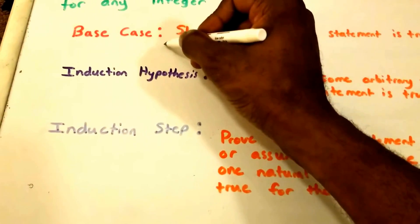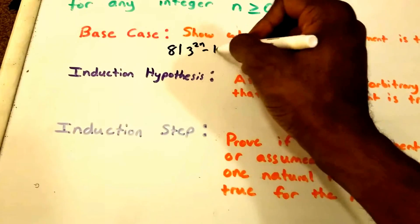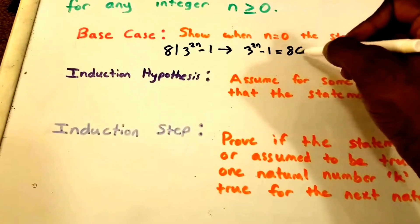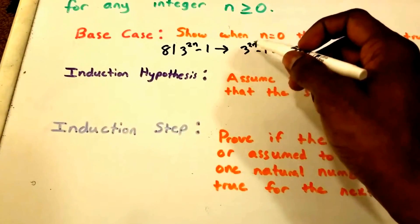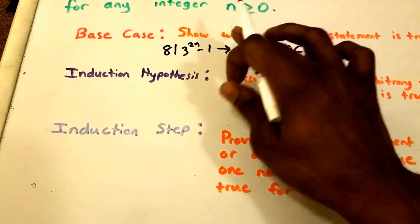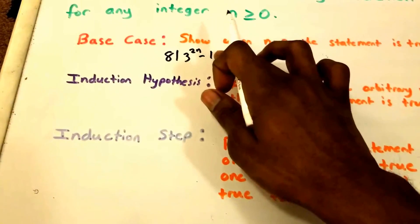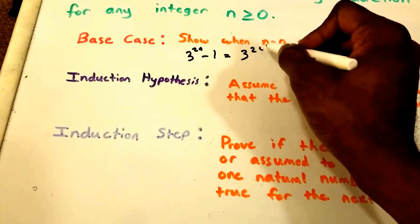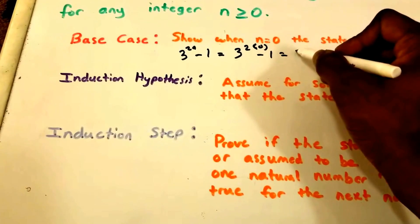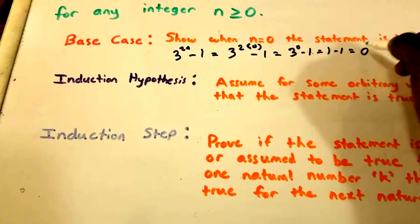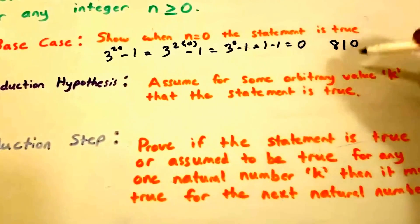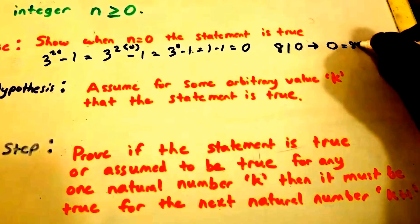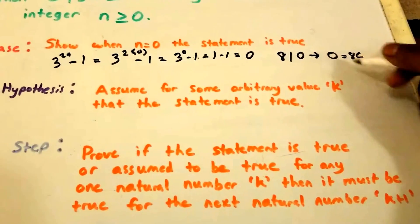In our base case we want to show that when n equals 0 the statement is true. Our statement is: 8 divides 3 to the power of 2n minus 1, which implies that 3 to the power of 2n minus 1 equals 8 times some constant C. So 3 to the power of 2(0) minus 1 equals 3 to the power of 0 minus 1, which equals 1 minus 1, which equals 0. And 8 does divide 0 — we can write 0 equals 8 times 0.